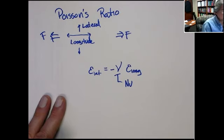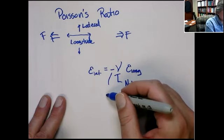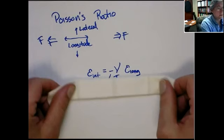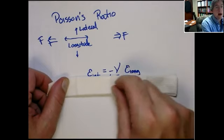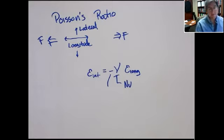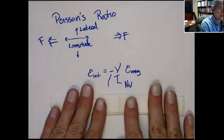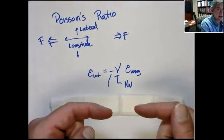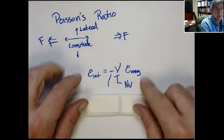There is a negative sign here because when you stretch in one dimension, you get a sign change — in other words, a contraction in the other dimension. So when I pull, the longitudinal direction has a positive strain in stretching, while the strain in the lateral dimension is a negative strain. And if you sort of compress it, there's a negative strain in the longitudinal direction, and the strain in the lateral dimension will be positive — it will extend.